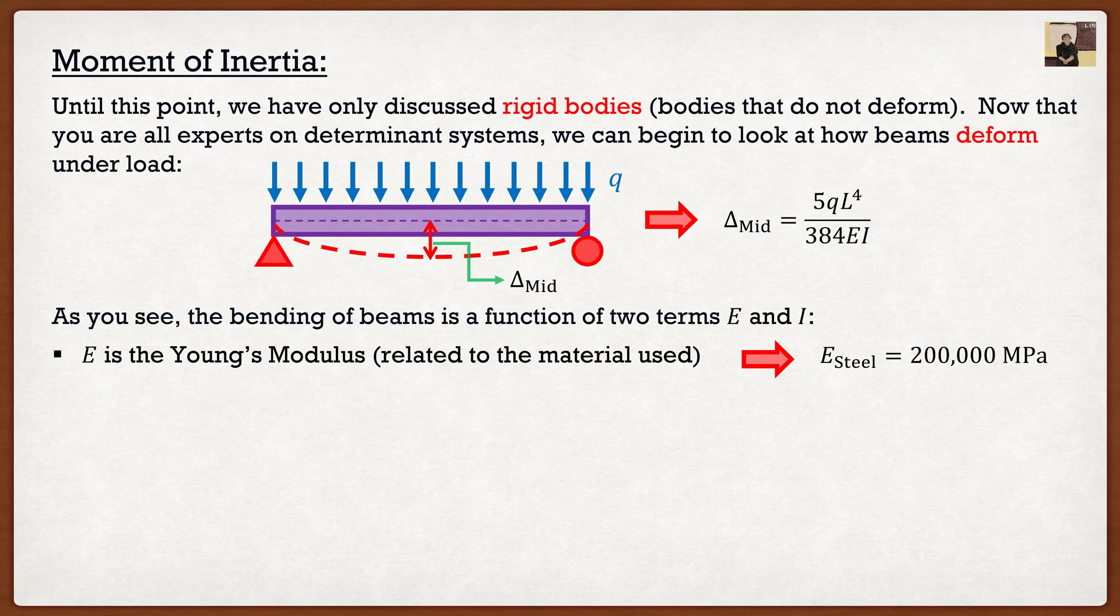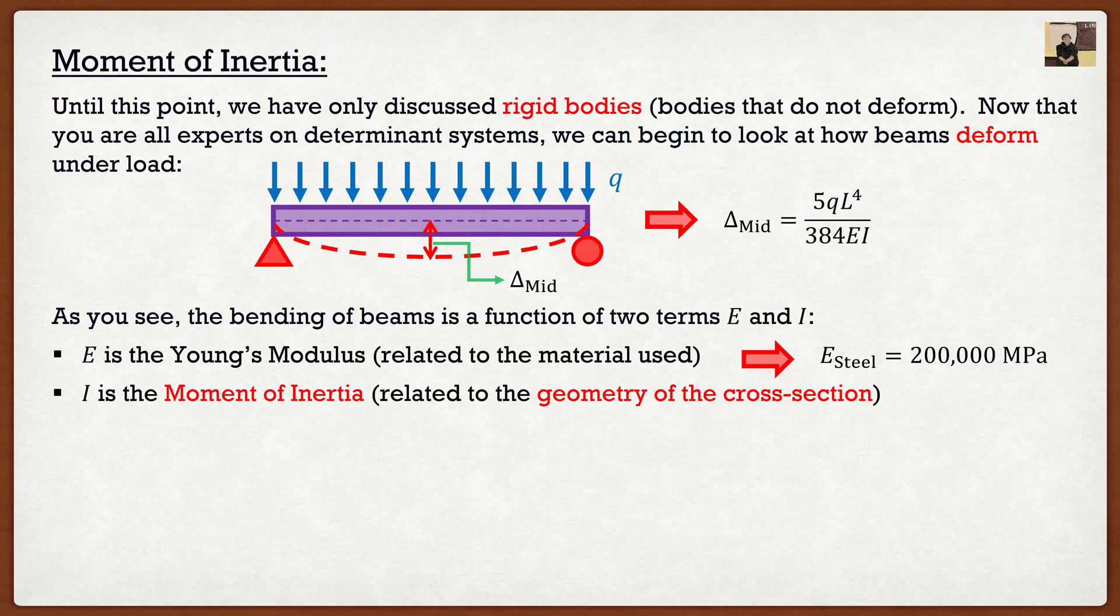The second one, which is kind of the topic of today, is moment of inertia. And it's related to the geometry of the cross section. As we're going to see, depending on the cross section of our beam, it's going to bend either easier or harder. The best example would be if I were to take a book, and I were to bend it this way, as we can see, it's very easy to bend.